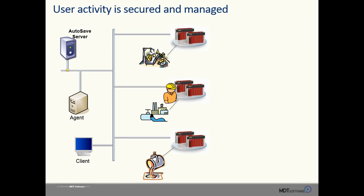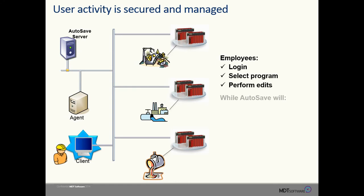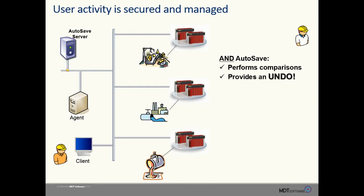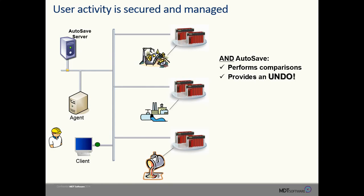Rather than users logging directly into devices and making changes, the users log into Autosave. They select the program they want and perform their edits. Autosave will verify the user's permissions and keep track of their changes. And if a user makes a change that's less than optimal, Autosave provides an undo capability. The engineer can upload the program from the processor, compare it to a known good copy on file, make any changes necessary, and download a good program to the processor, restoring operations quickly.